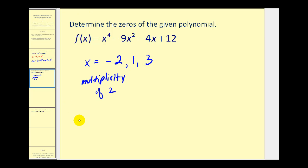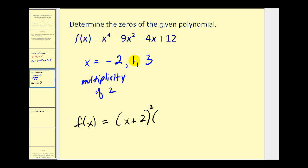Again, these real zeros help us rewrite the function in factored form. If x equals negative two is a zero with multiplicity two, then x plus two squared is a factor. If x equals one is a zero, then x minus one is a factor. And if x equals three is a zero, then x minus three is a factor. So the factored form is x plus two squared, times x minus one, times x minus three.